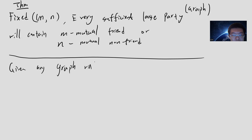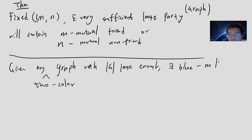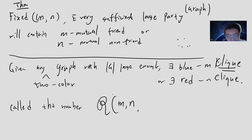there must be a two-coloring of the graph using red and blue, such that there exists a blue M-clique or at least a red N-clique. A clique means that there are M points which are all connected to each other. Let's call this number the Ramsey number R(M,N). From the previous proof, we know that R(3,3) is basically six.